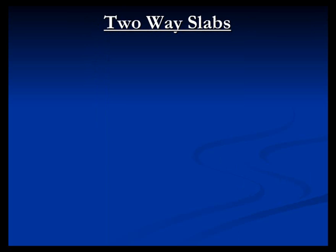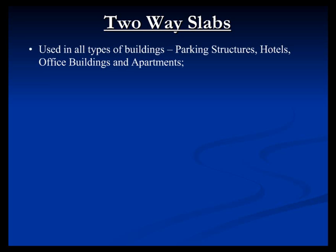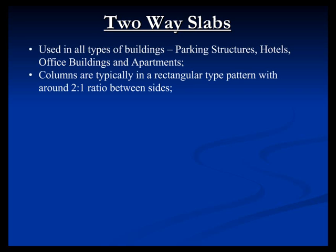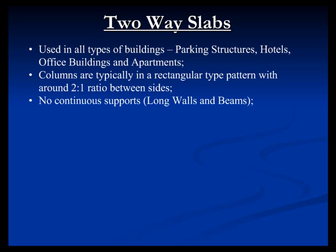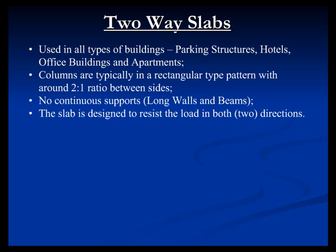Moving forward, two-way slab design is used in all types of buildings — parking structures, hotels, office buildings, apartments — and is usually a very good option for these types of structures. The columns are typically in a rectangular pattern, maybe a two-to-one ratio between sides. There's no hard and fast rule that if you are not 2.0 to 1.0, it's a one-way slab. Basically, you are not relying on walls or beams for support; the slab has to go in two directions to be structurally stable, with no long walls or beams for continuous support — everything is effectively done by the columns.